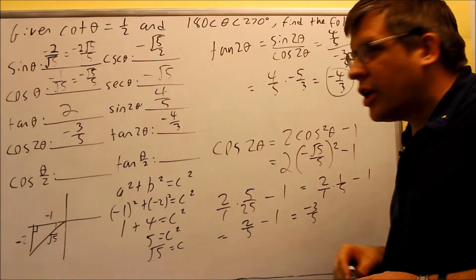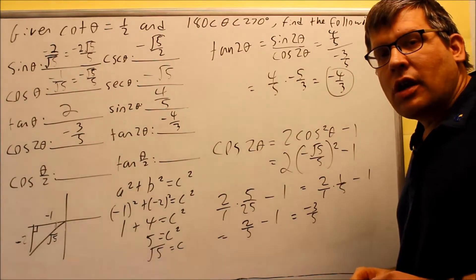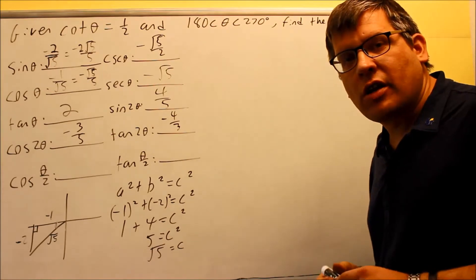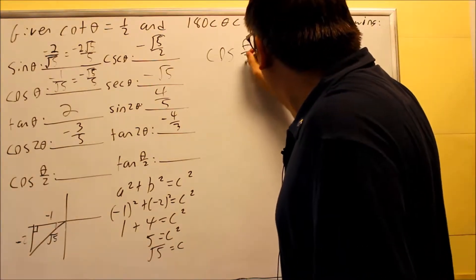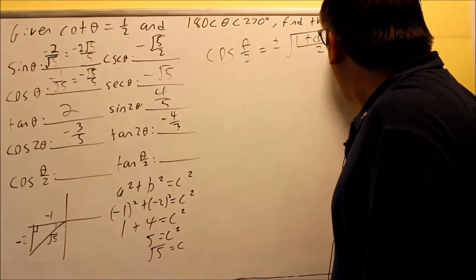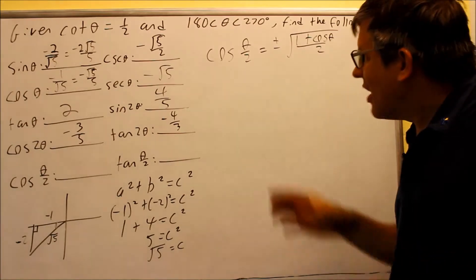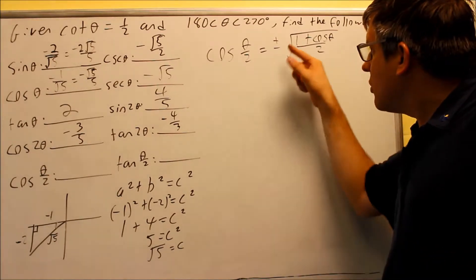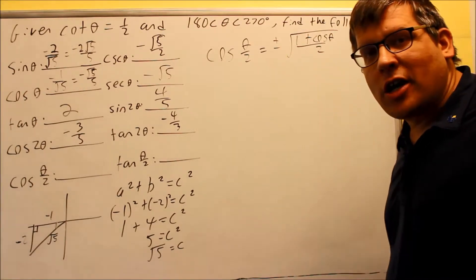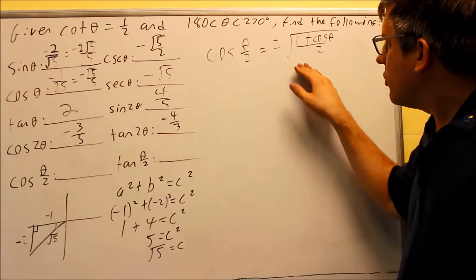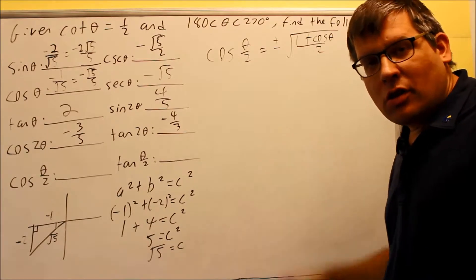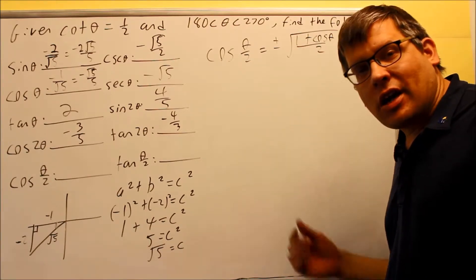Now that we've done all the double angles, we're ready to look at the half angles. The next one is cosine theta over 2. The formula is plus or minus the square root of 1 plus cosine theta all over 2. Whenever you have a formula with plus or minus under the square root, you need to determine whether it's positive or negative — you can't just leave it as plus or minus.